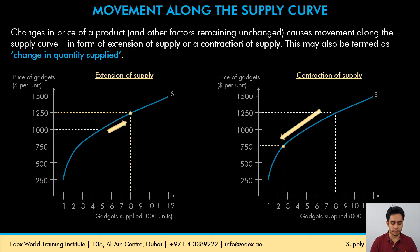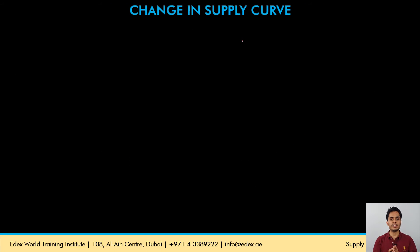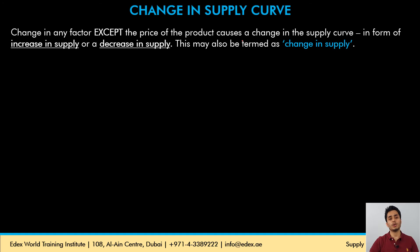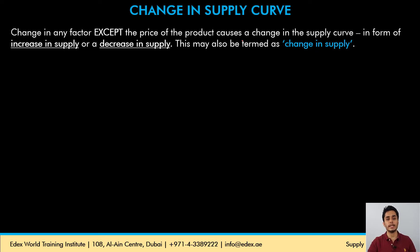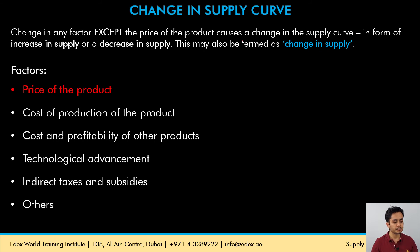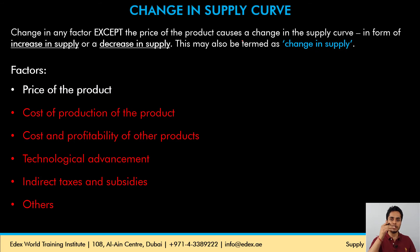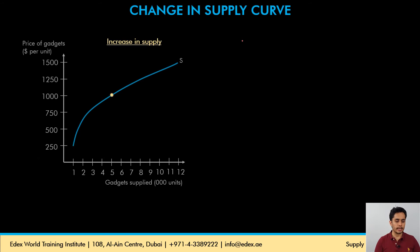Then we have the change in the entire supply curve. If there is a change in factors other than price, there will be a change in the entire supply curve in the form of either an increase in supply or a decrease in supply. Let's understand the increase and decrease in supply with the help of a graph.